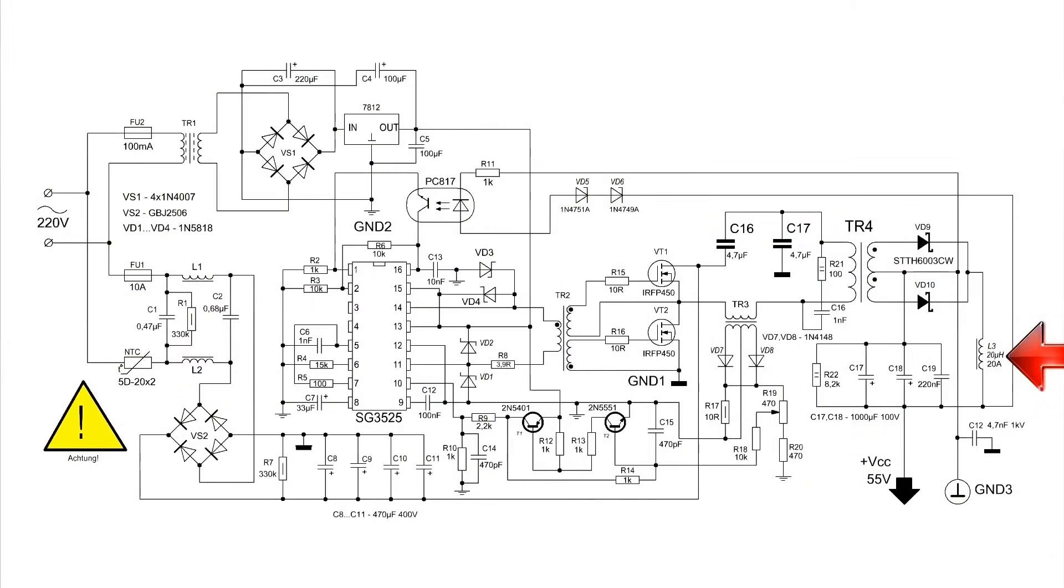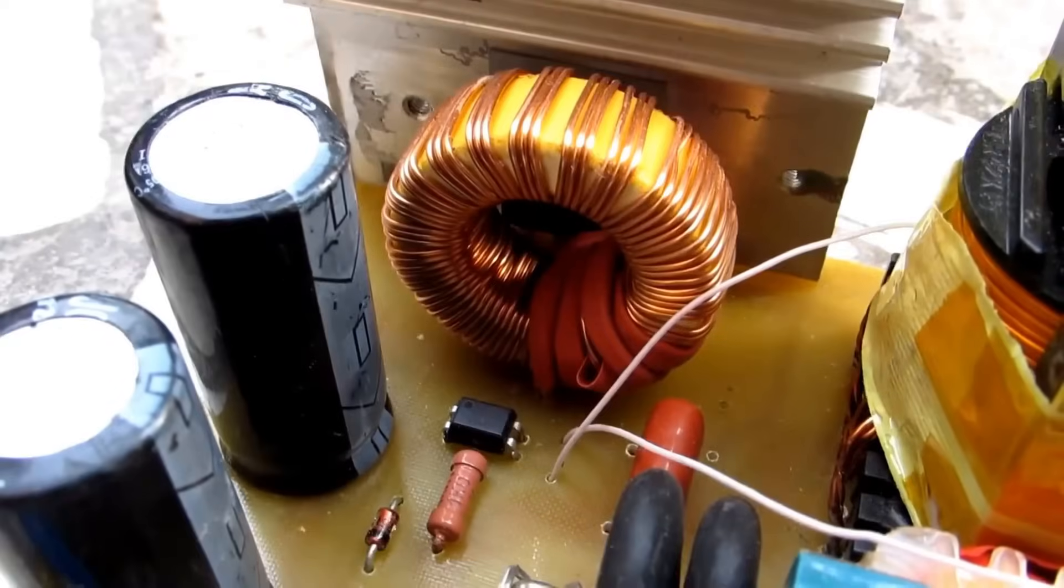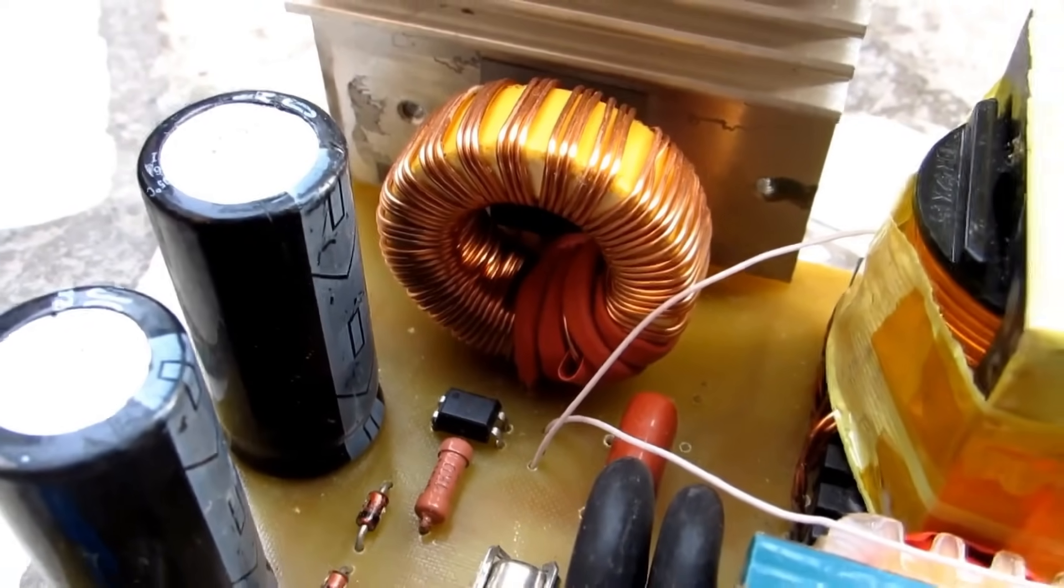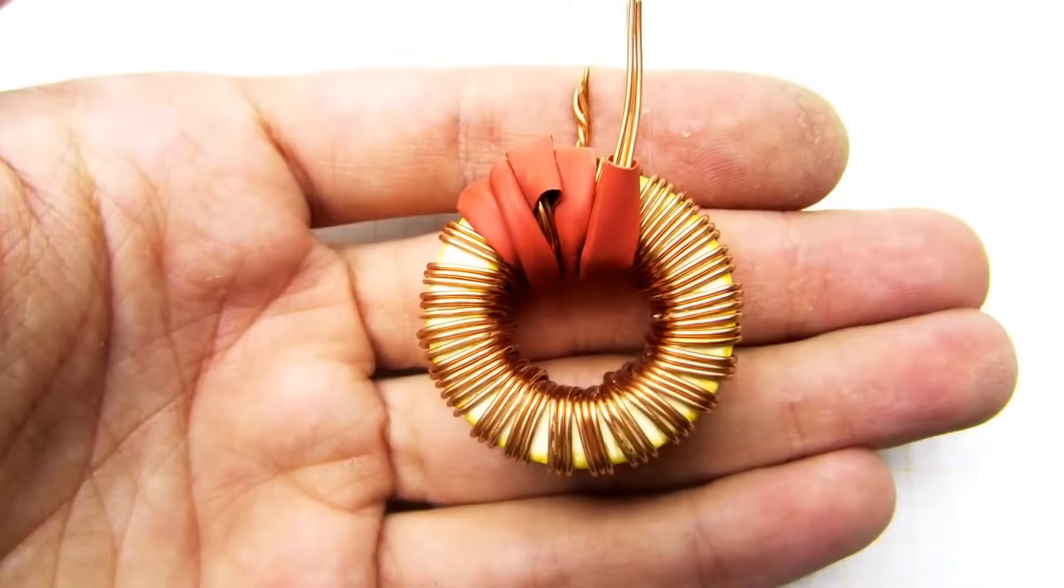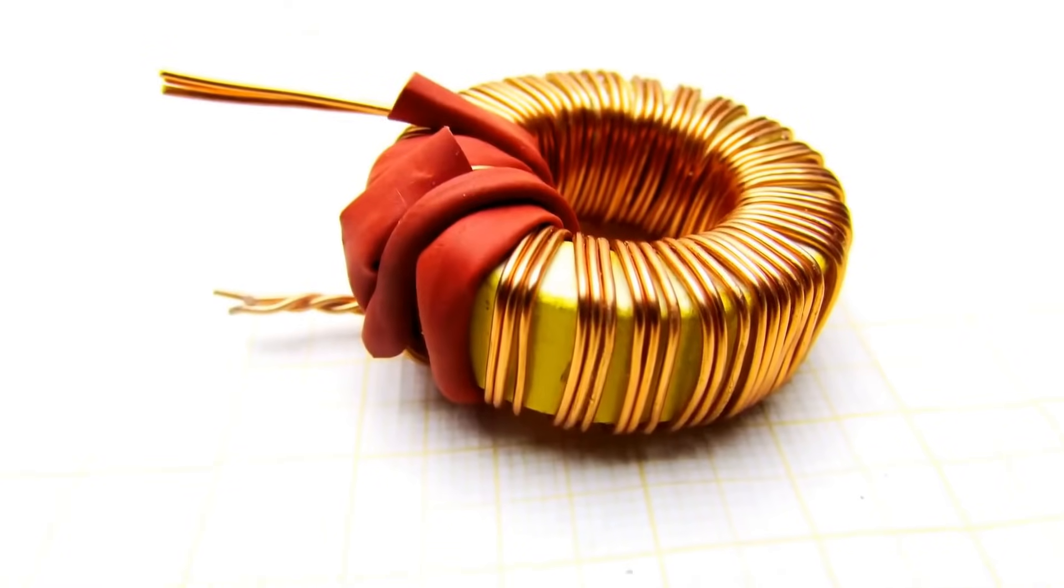Output choke. It is also calculated using a specialized program, the link to which I will leave in the description. There's not much to say here. Yellow-white ring. Core material: powdered iron. It was taken from the output filter of a powerful computer power supply.